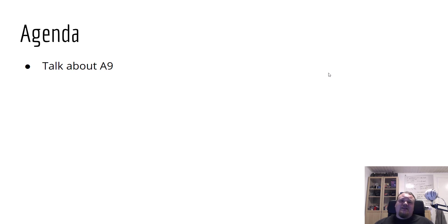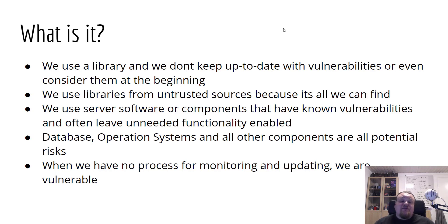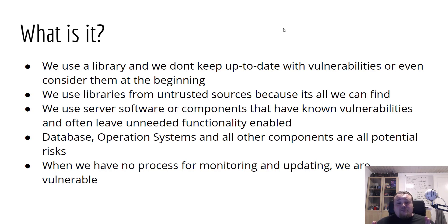So what is OWASP A9 — components with known vulnerabilities — all about? We need to make sure you understand some technical aspects about using a library that we don't keep up to date with vulnerabilities, or even consider them at the beginning. Using libraries is something we need to do when we develop systems on an everyday basis — whether it's a web page, an application, or a server. If you're not aware of the library you're using, it might have some known, or even unknown, vulnerabilities. So it's very important that you research the library you're going to use and make sure it's without any known vulnerabilities.